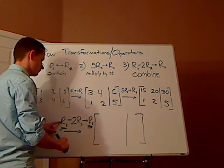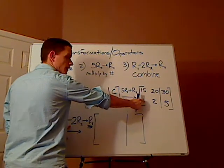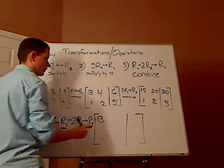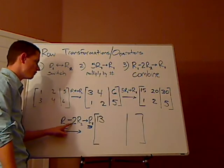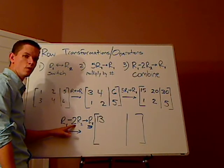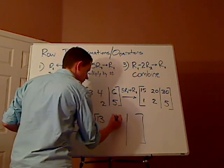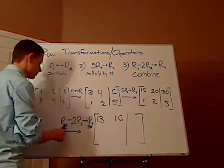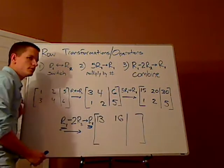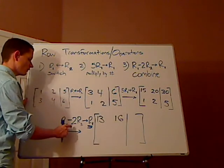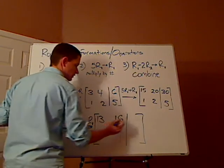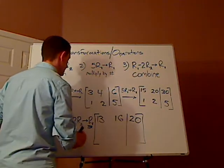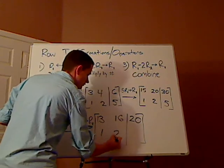So row 1, alright, 15 minus 2 times 1. So that's 2. So 15 minus 2, that's 13. You do the same thing with the 20. So it's 20 minus 2 times 2, which is 4. 20 minus 4 is 16. You do the same thing with the 30. You're starting off with 30. Minus 2 times 5. 2 times 5 is 10. So this is 30 minus 10. That's going to give me what? 20. And then row 2 stays the same. So that's 1, 2, 5.